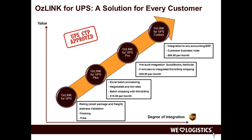Finally, OzLink for UPS Custom is virtually the most advanced integration solution for WorldShip available. It can be integrated to any backend host ERP and handles the most advanced business rules. For example, you can automate the selection of the right UPS service based on shipment weight or shipment value. Virtually any attribute of the shipment can be incorporated to automate these business rules.